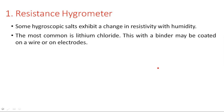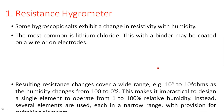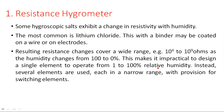The humidity of the atmosphere is measured in terms of resistance changes. With a binder, this material may be coated on a wire or on electrodes. The resulting resistance changes cover a wide range — from 10^4 ohms to 10^9 ohms. As humidity changes from 0 percent to 100 percent, the resistance of lithium chloride changes from 10^9 to 10^4 ohms.